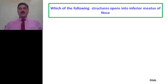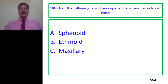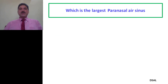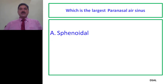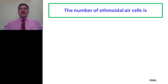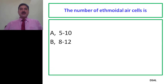Next question: which of the following structures opens into the inferior meatus of the nose? A. Sphenoidal air sinus. B. Ethmoidal air sinus. C. Maxillary air sinus. D. Frontal. It is the nasolacrimal duct that opens into the inferior meatus. Next: which is the largest paranasal air sinus? A. Sphenoidal. B. Ethmoidal. C. Maxillary. D. Frontal. Again, the maxillary sinus is the largest paranasal air sinus — its volume is about 15 ml. Next question: the number of ethmoidal air cells is — A. 5 to 10, B. 8 to 12, C. 10 to 14, D. 15 to 18. D is the correct option.